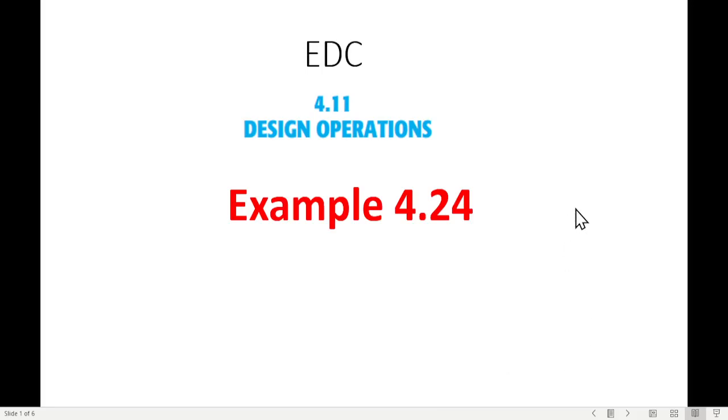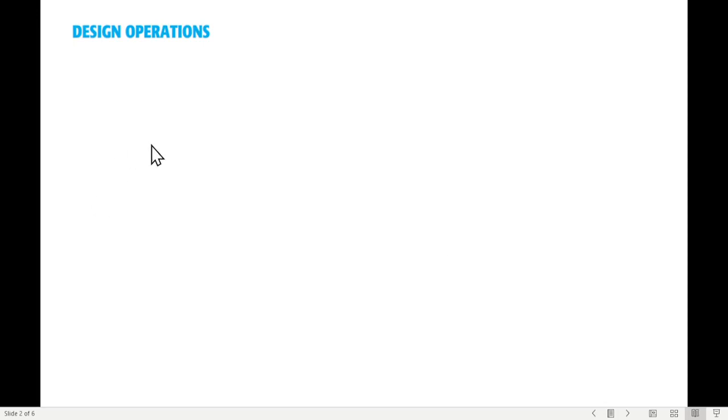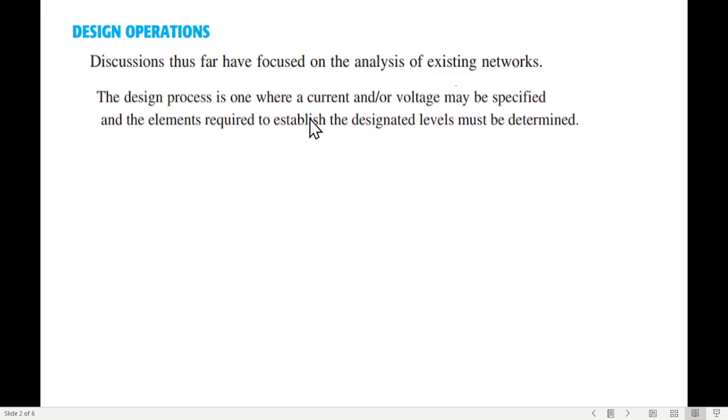This video is from Chapter 4 of the EDC book by Mr. Bolstead, discussing design operations with example 4.24. In design operations, we must keep in mind that so far we have focused on analyzing existing networks. While designing, we are actually given voltage and currents, and we are required to establish the designated level of elements - we have to find the value of the resistances primarily.